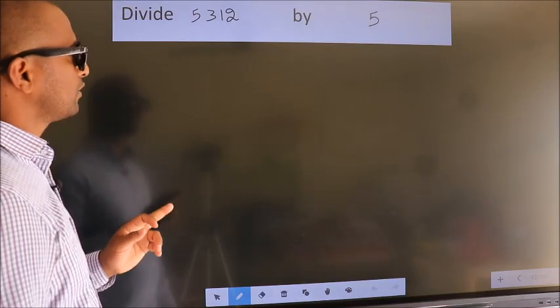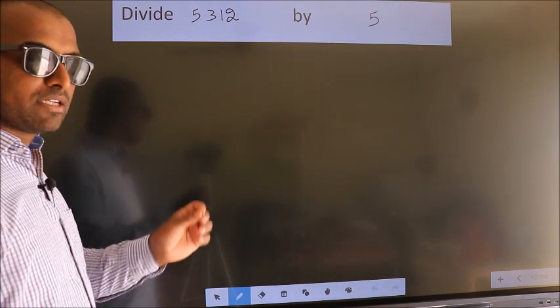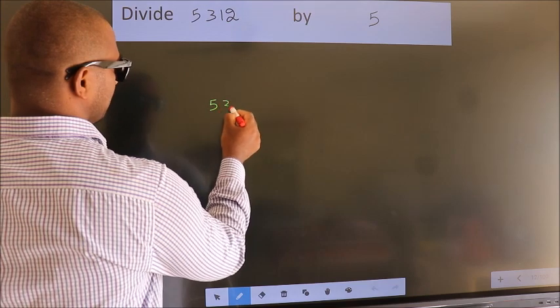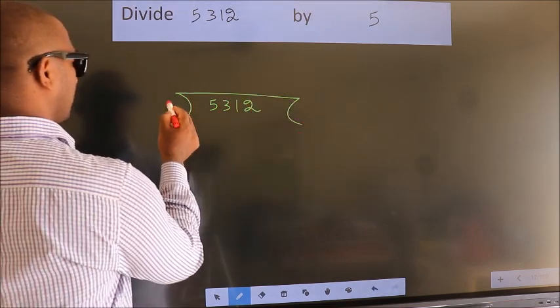Divide 5,312 by 5. To do this division, we should frame it in this way: 5,312 here, 5 here.